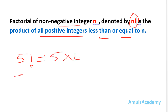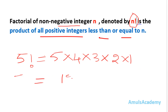So 5 factorial is nothing but 5 into 4 into 3 into 2 into 1. That gives us: 5 times 4 is 20, times 3 is 60, times 2 is 120, and 120 into 1 is 120. So the value of 5 factorial is 120.